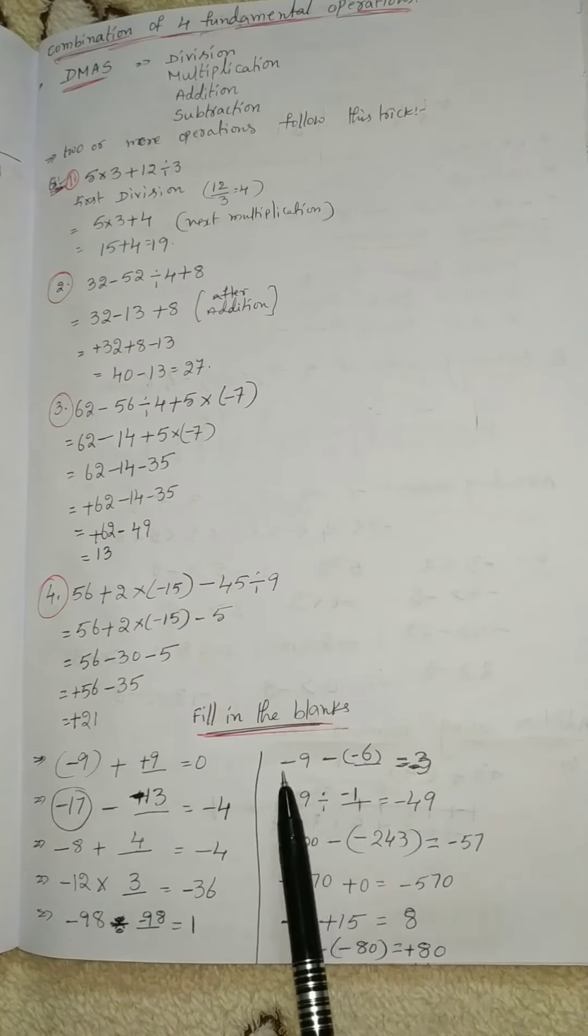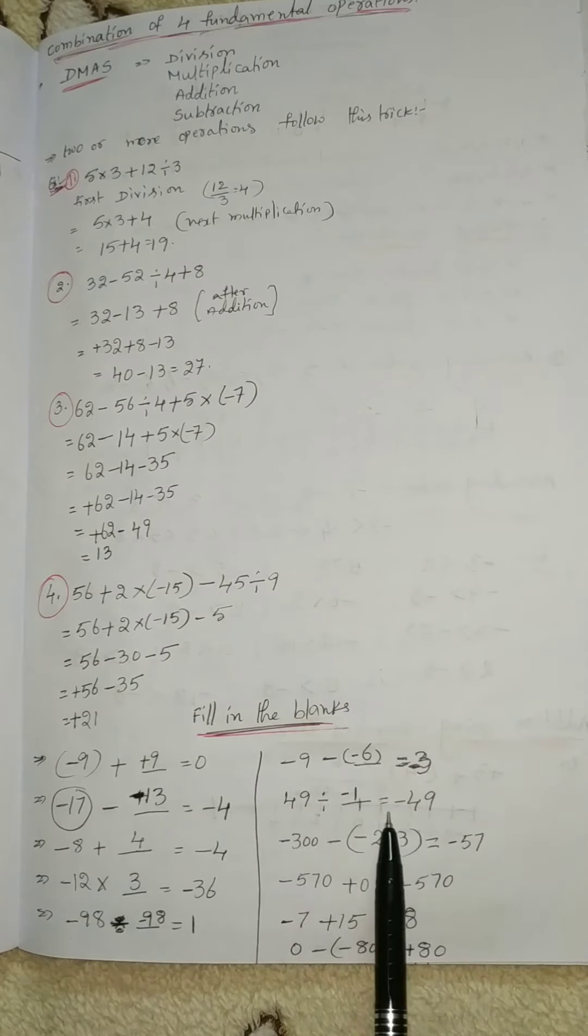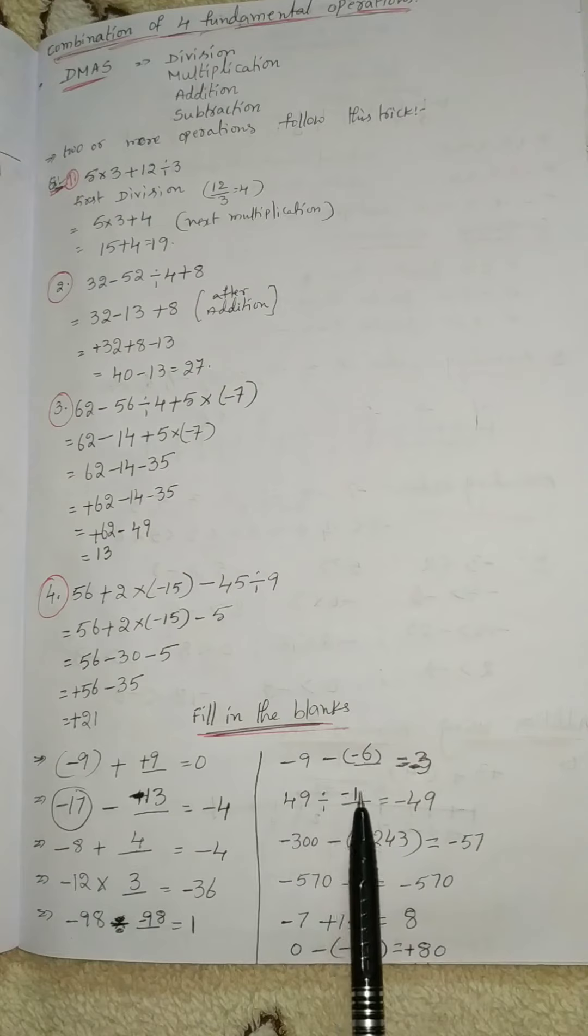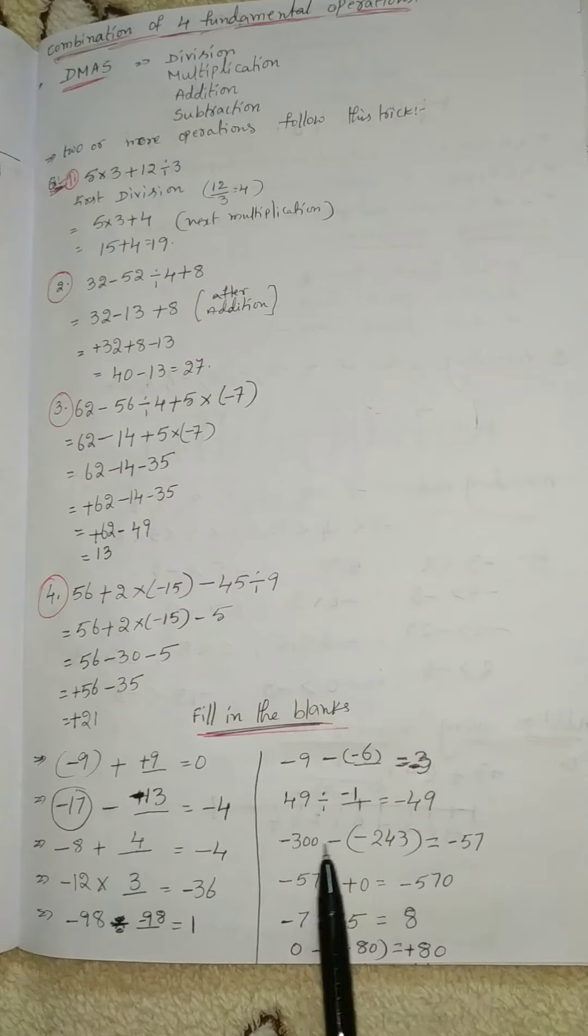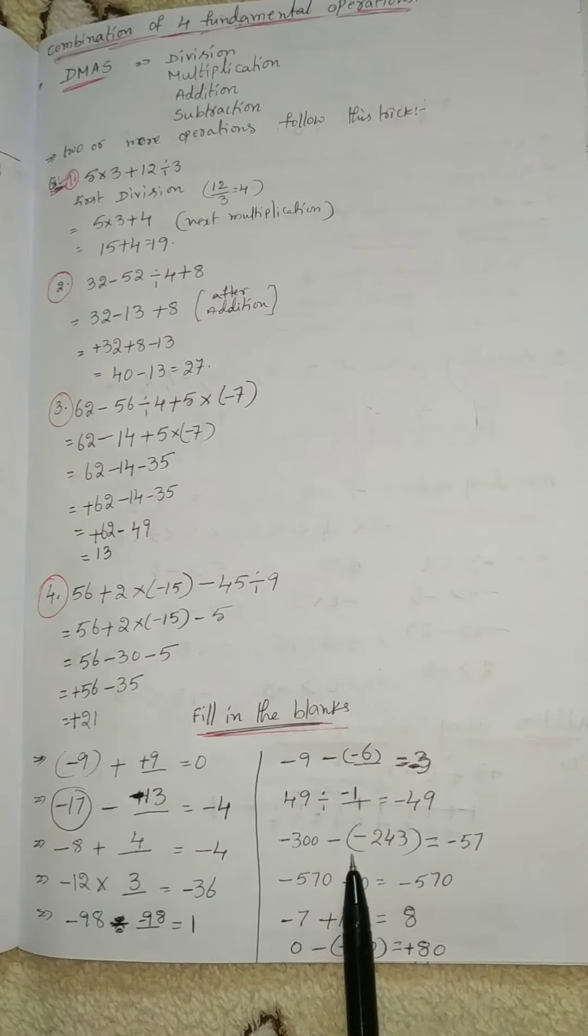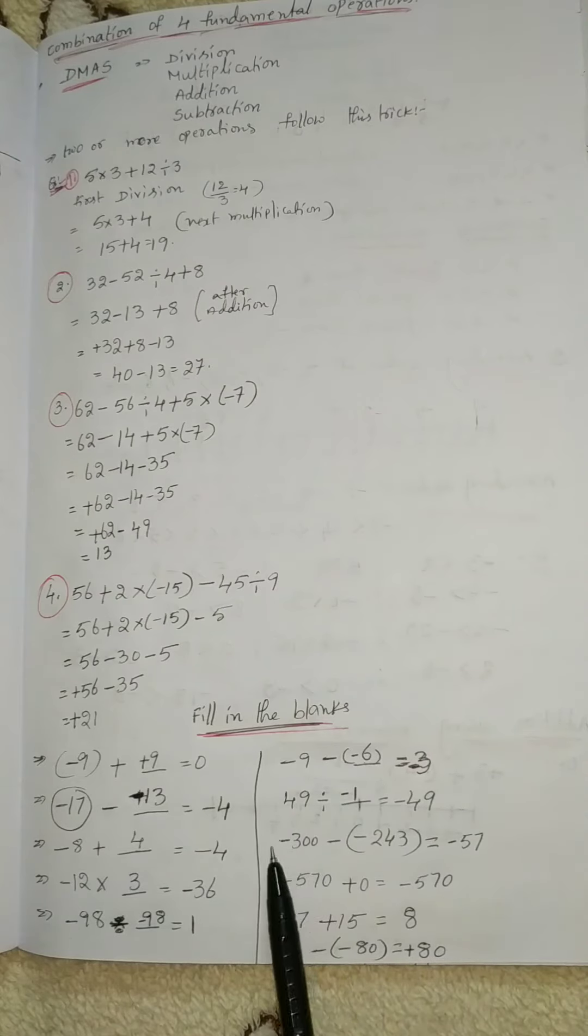49 divided by what equals -49? So -1. Next one: -300 minus -243. Minus times minus equals plus, so we subtract this number and put the minus symbol.